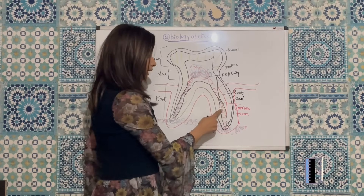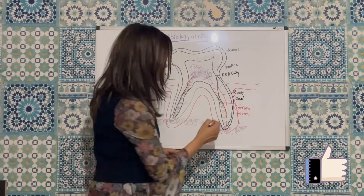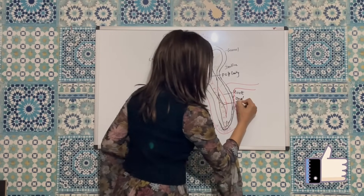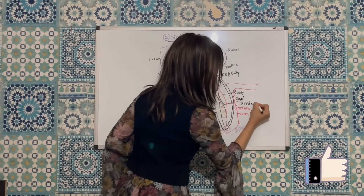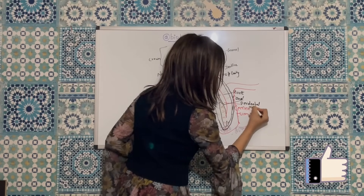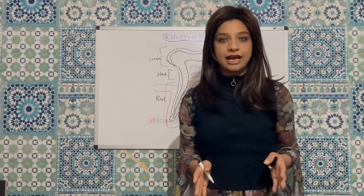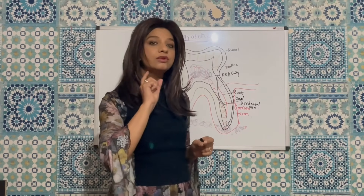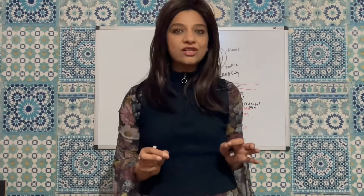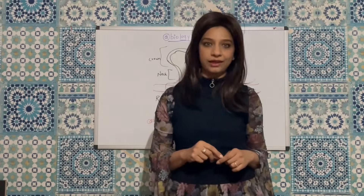The layer of membrane that contains the blood vessels and nerves is called the periodontal membrane. This periodontal membrane is responsible for pain sensation. It is a fleshy tissue that holds the teeth in place, attaches it to the adjacent teeth, and also helps to resist the stress of chewing.